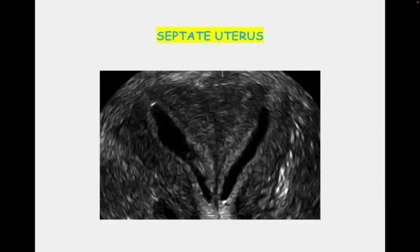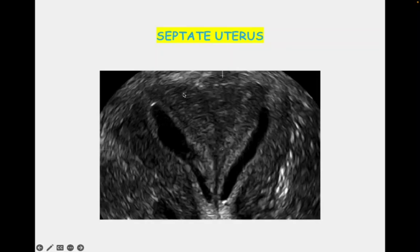Another role of SIS is that 3D ultrasound can also be done with SIS, and it is a surrogate of hysteroscopy. When SIS is correctly done, it is a very good method to replace hysteroscopy. Here you can see a 3D ultrasound has been done, and the septum is very clearly visible in the coronal section of the uterus because the fluid has distended into the uterine cavities.